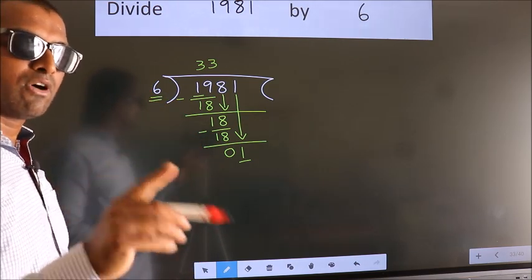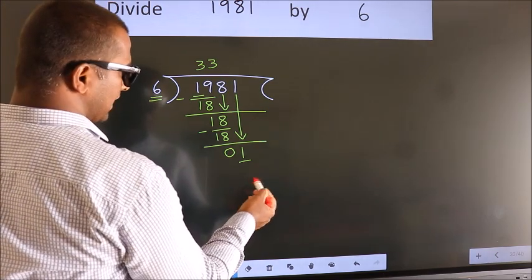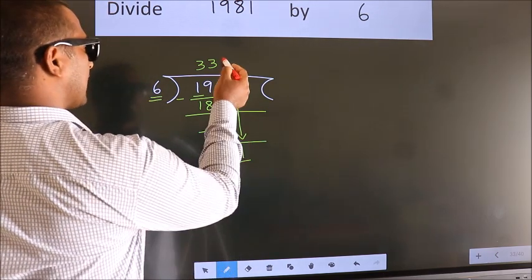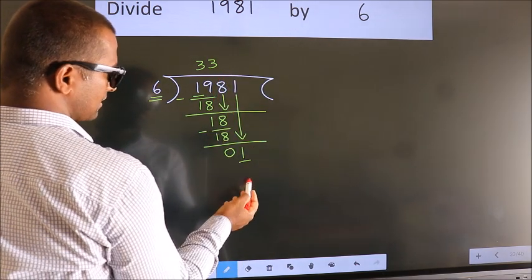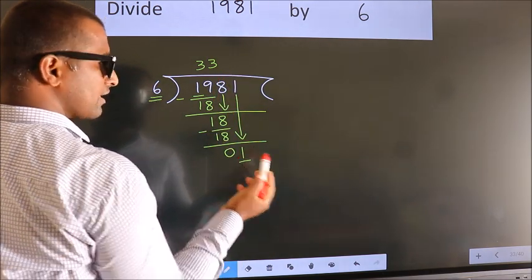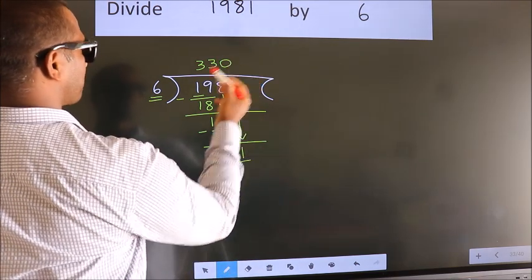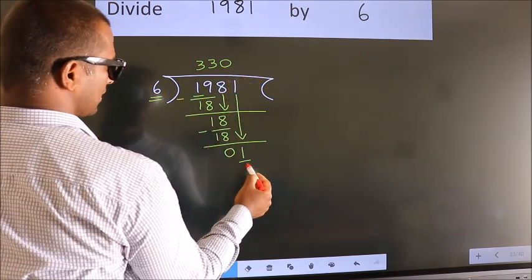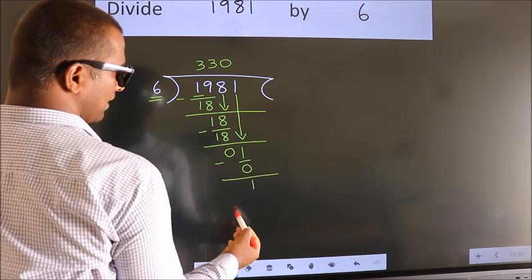Instead of that, what we should think of doing is which number should we take here? If I write 1, we get 6. But 6 is larger than 1. So what we do is we take 0 here. So 6 into 0, 0. Now we subtract. We get 1.